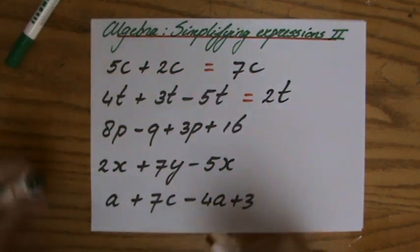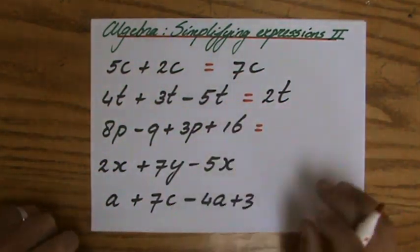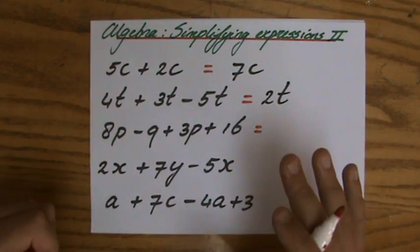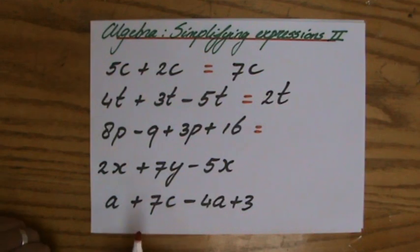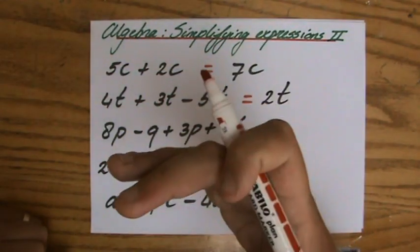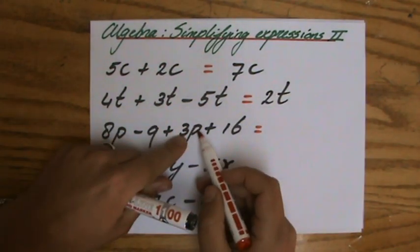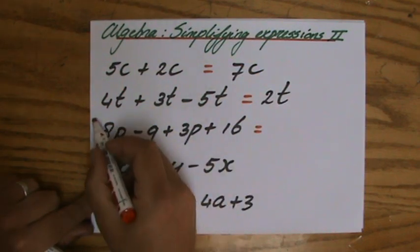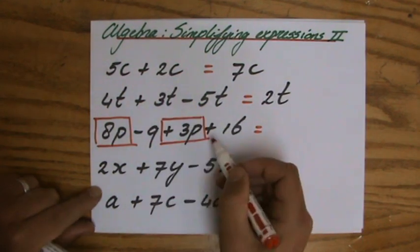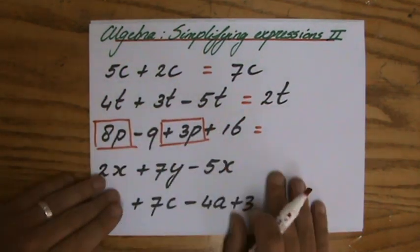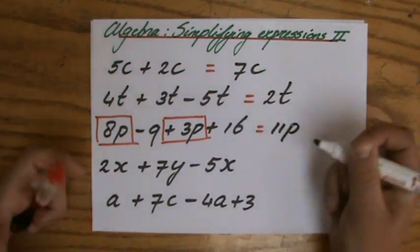Third question, 8P minus 9 plus 3P plus 16. Perhaps a little bit more advanced. We have to carefully identify the like terms and realize that the sign belongs to the term directly following it. I have 8P and a positive 3P, so actually it's 8P plus 3P, and that indeed is 11P.